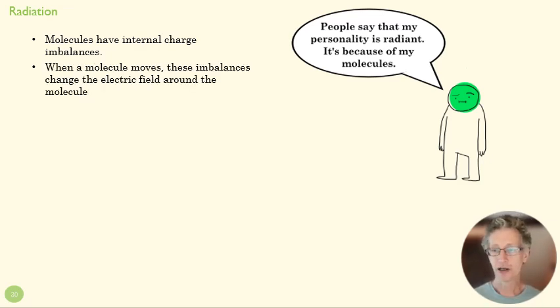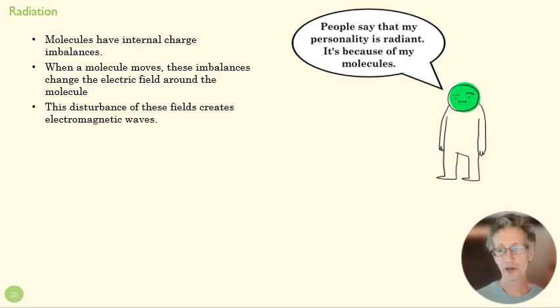Those molecules are moving, and as those molecules move, the imbalances change. We know that a disturbance in a field creates a wave, and so these disturbances in the electromagnetic fields around the molecules create electromagnetic waves.